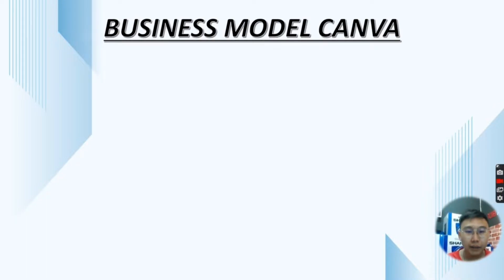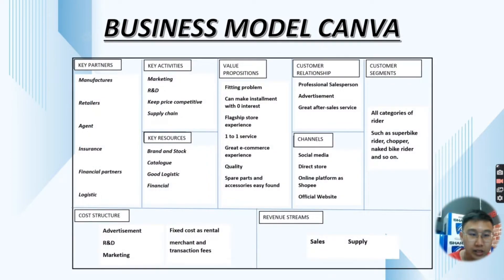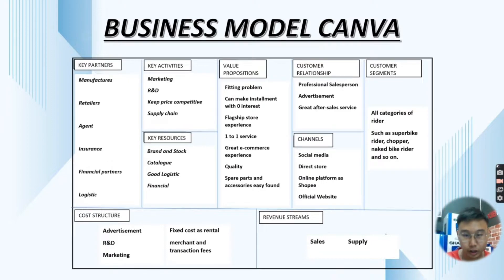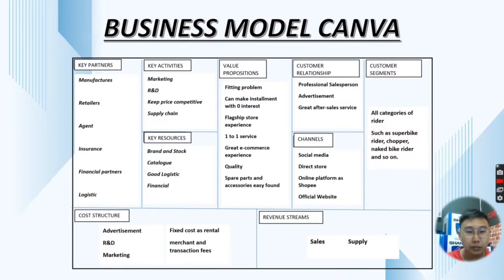Today, let me discuss about the Business Model Canvas. In BMC, we have 9 characteristics, which are Key Partners, Key Activities, Key Resources, Value Proposition, Customer Relationship, Channel, Customer Segment, Cost Structure, and also Revenue Stream. Let me explain in detail one by one.